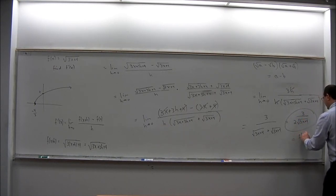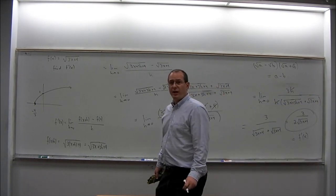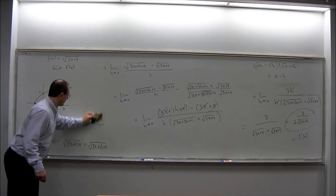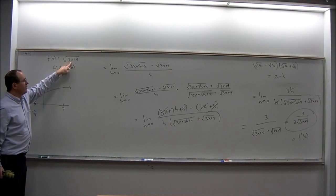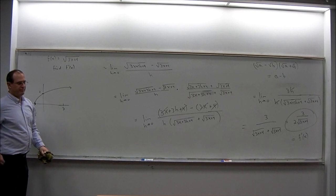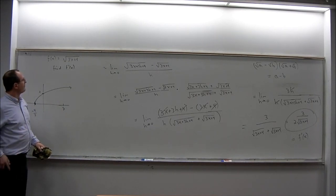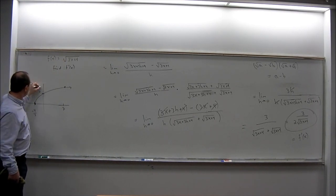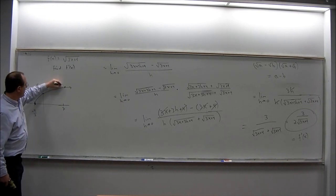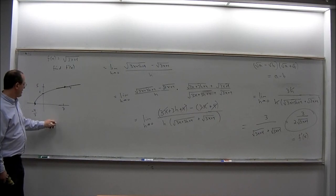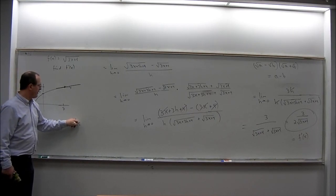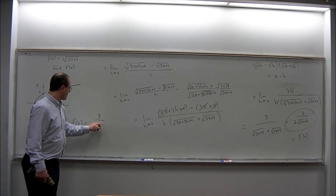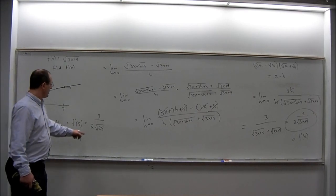The derivative is 3 divided by 2 times the square root of 3x plus 4. Back to the picture: if we plug in x equals 7, the height of the curve gives us the square root of 3 times 7 plus 4, which is the square root of 25, which is 5. So this is the point (7, 5). The slope of the tangent line at this point is f prime of 7. Plugging 7 into the derivative formula gives 3 over 2 times the square root of 25, which is 3 over 10. So the slope of the tangent line at that point is 3 tenths.